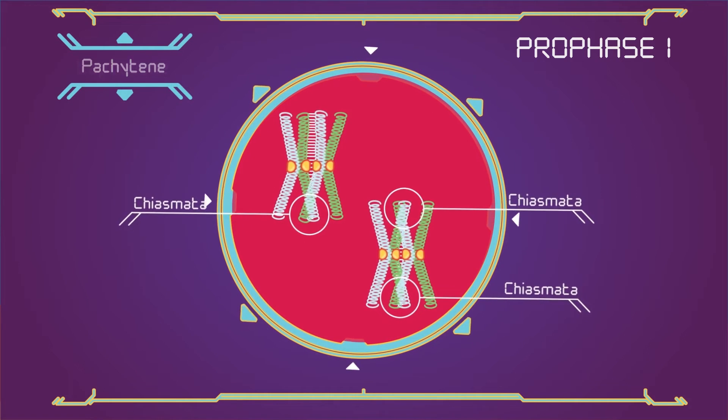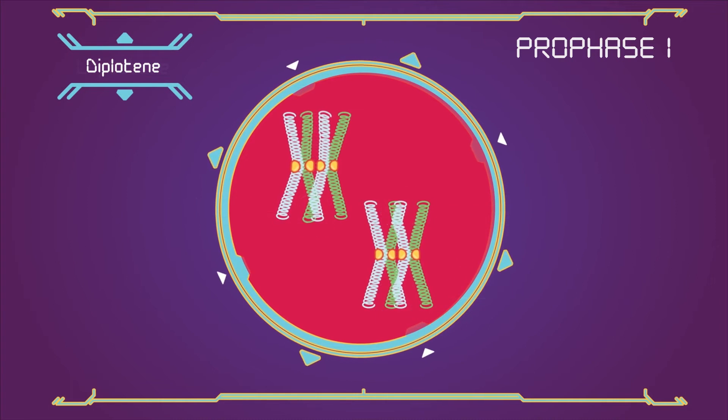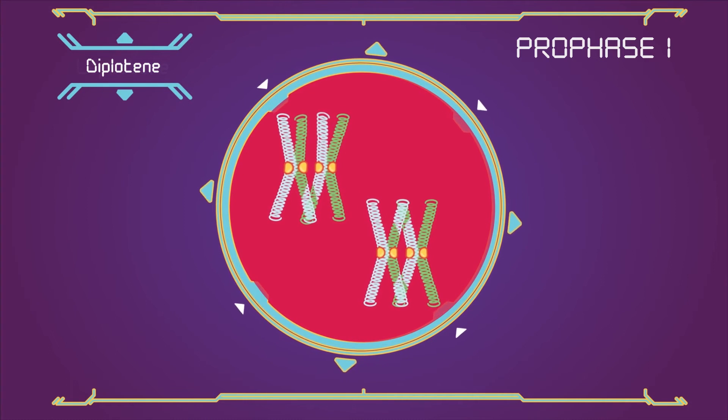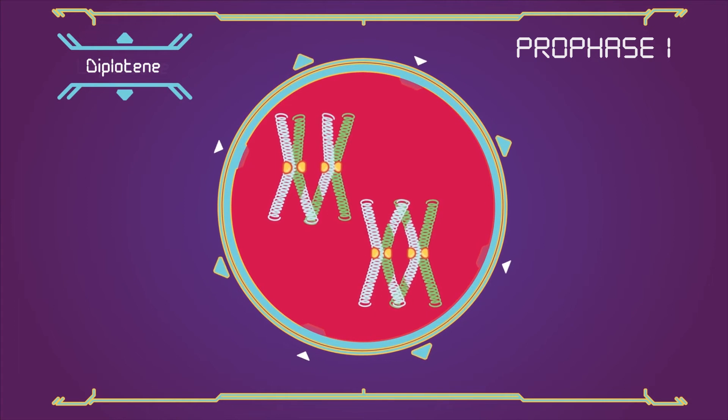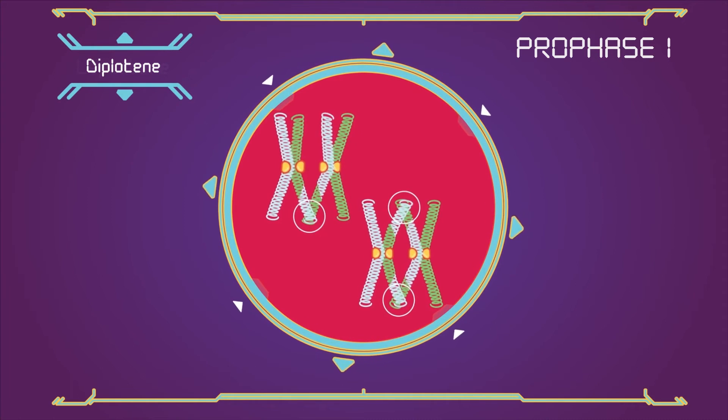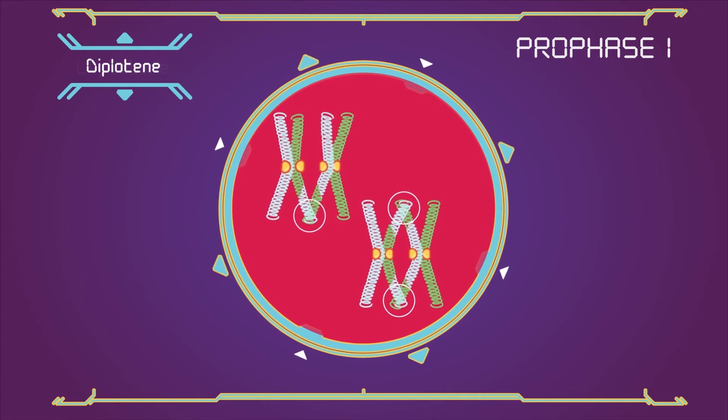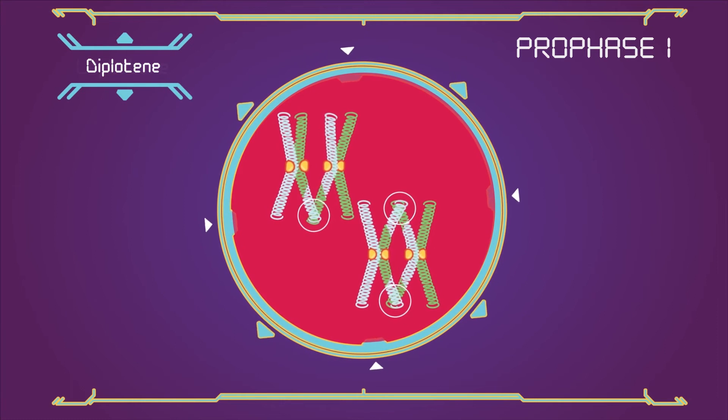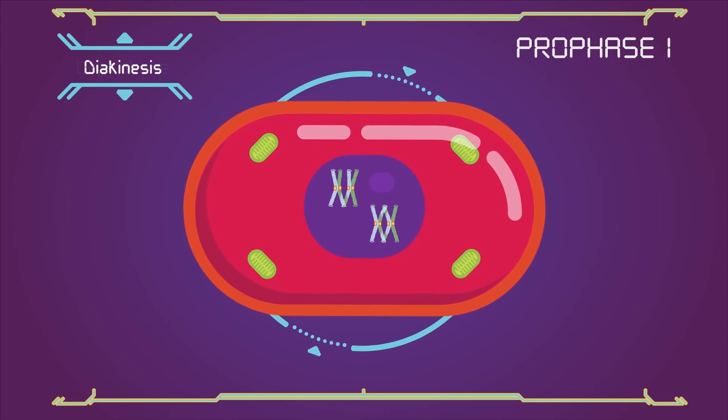Diplotene: the synaptomal complex degrades and homologous chromosomes separate from one another a little. However, the homologous chromosomes of each bivalent remain tightly bound at chiasmata, the regions where crossing over occurred. The chiasmata remain on the chromosomes until they are at the transition to anaphase 1. Diakinesis: it closely resembles prometaphase of mitosis. The nucleoli disappear, the nuclear membrane disintegrates into vesicles, and the meiotic spindle begins to form.